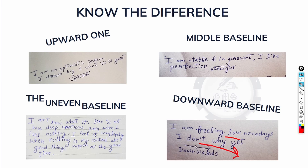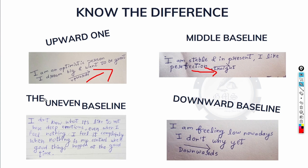So if you find someone who is writing like this — going downward — tell them to start writing in an upward direction or straight. Either one of these two baselines will help them be more optimistic and help them overcome any stress they are having.